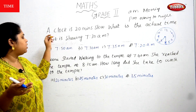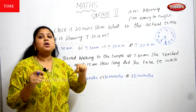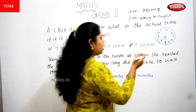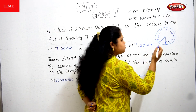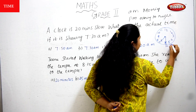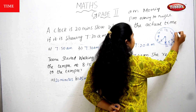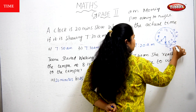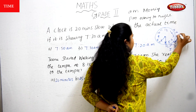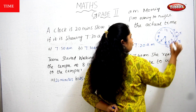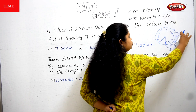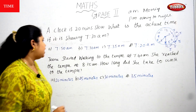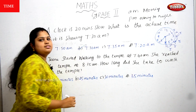Now the time shown is 7:30, but the clock is 20 minutes slower. So 20 minutes means counting back: 25, 20, 15, 10, 5 — that is four positions of 5 minutes each. So the actual time is 7:10. Option B is the correct answer.